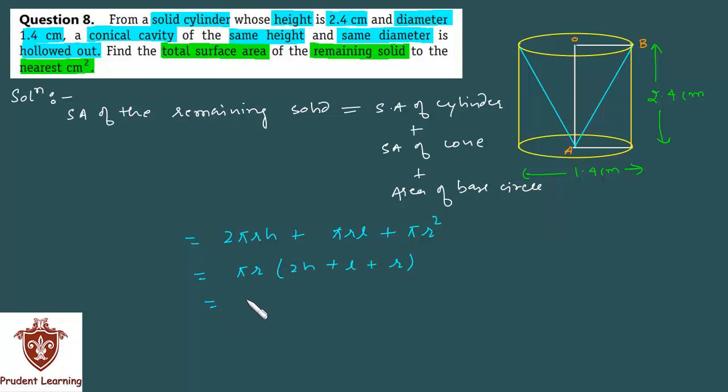Substituting the values we have 22/7. The cylinder diameter given is 1.4, its radius will be 0.7 cm. So here I will take 0.7 × (2 × 2.4 + l + 0.7). Here l is slant height. The cone's slant height is not available. You have to find it.